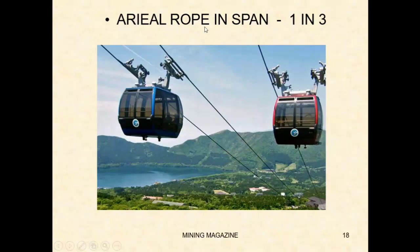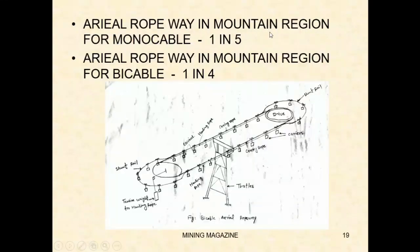Next, in mountain hill areas there are three regions. In the mountain region, the gradient is 1 in 3 for single cable haulage and 1 in 5. For twin cable or dual cable haulage in the mountain region, the gradient limit is 1 in 4.